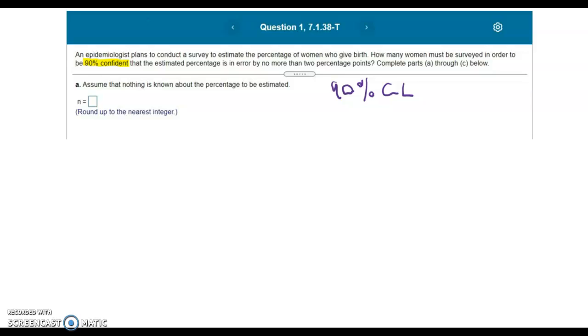We also know that our error is no more than two percentage points for the error. Now, error is E.